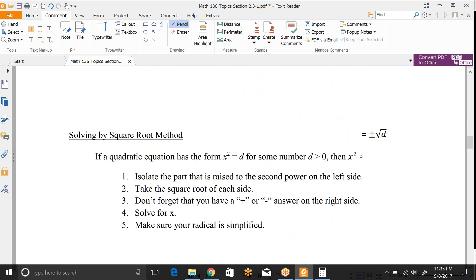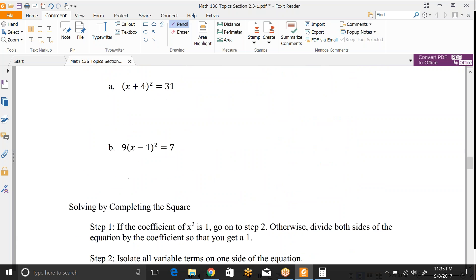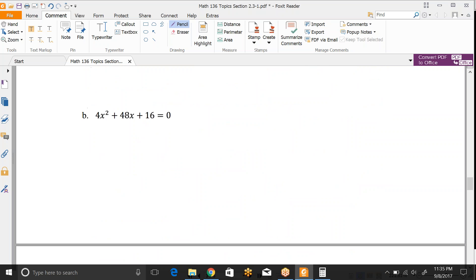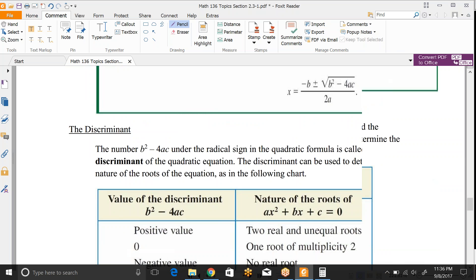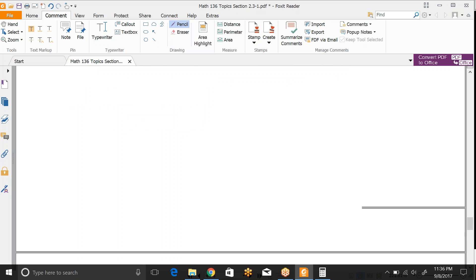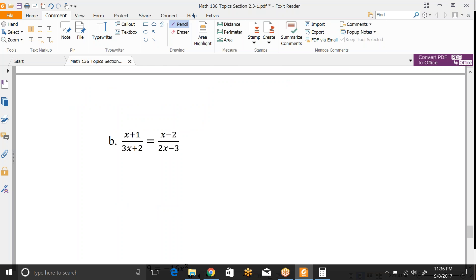We did all of the square root method problems in class and both of the completing the square problems. The only thing that was left was a couple more of the quadratic formula ones. So we did A together and we need to do the remaining ones before the application problem. For this we're looking at something that doesn't quite look like a quadratic but it does have one fraction on each side with an equal sign between them. So we can cross multiply.